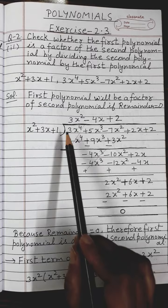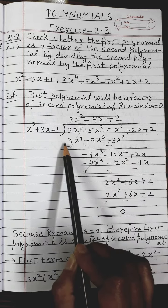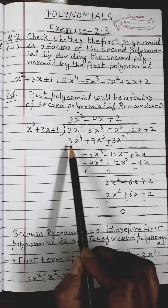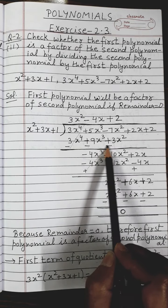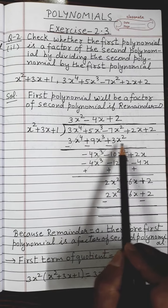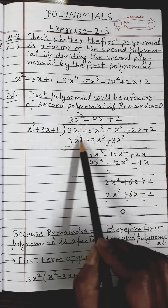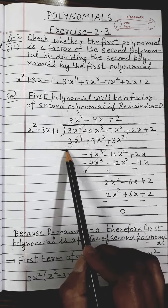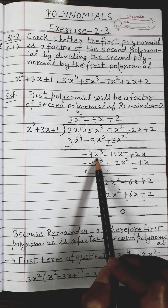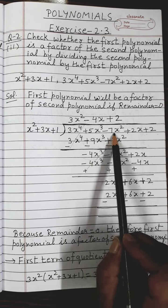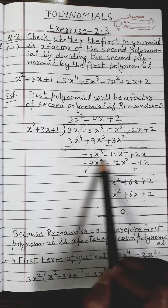Now I subtract these two polynomials by reversing the signs of the second row terms: plus becomes minus, plus becomes minus, plus becomes minus. Carrying out the subtraction: 3x⁴ - 3x⁴ = 0, which I show by cancelling. Next, +5x³ - 9x³ gives -4x³. Next, -7x² - 3x² gives -10x². The subtraction process is completed.